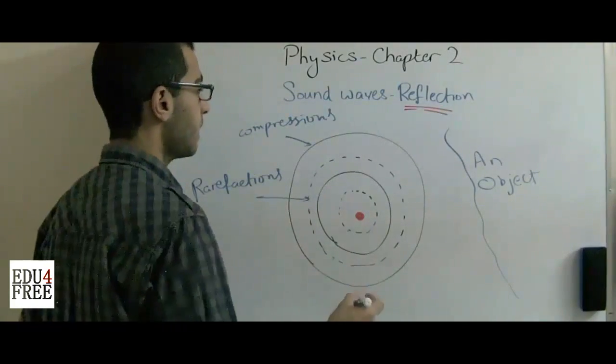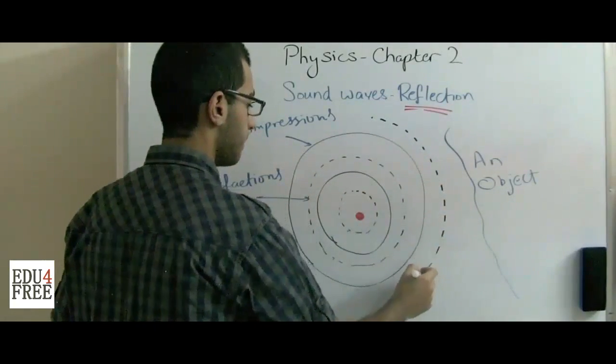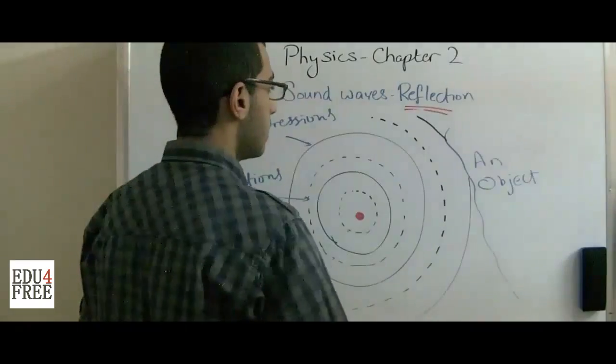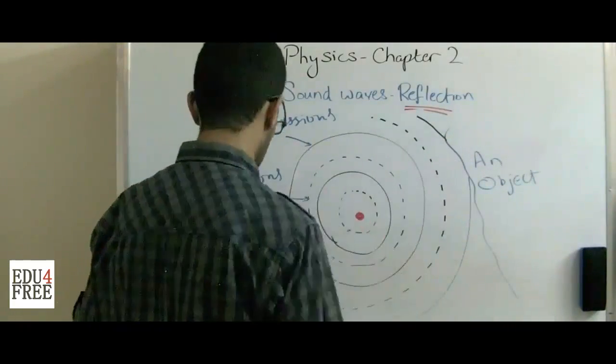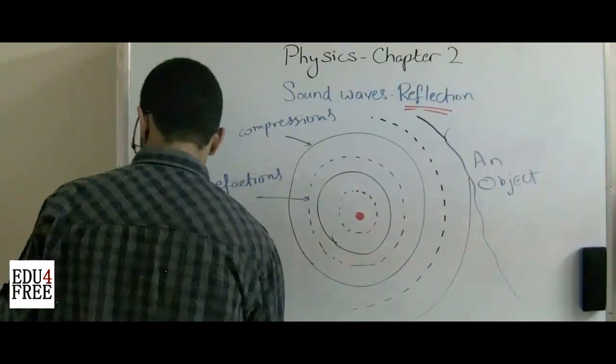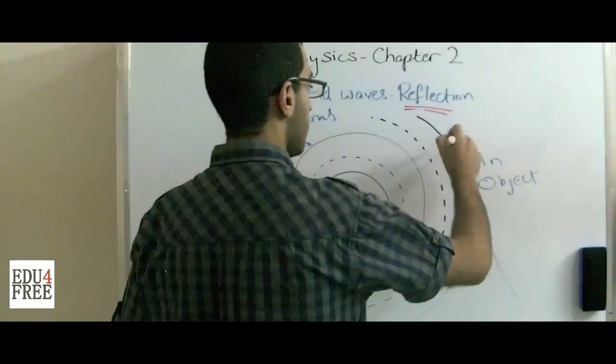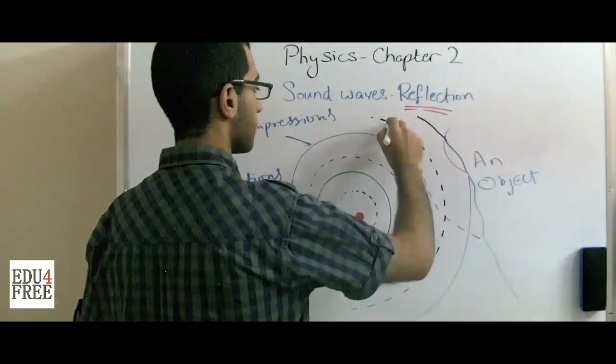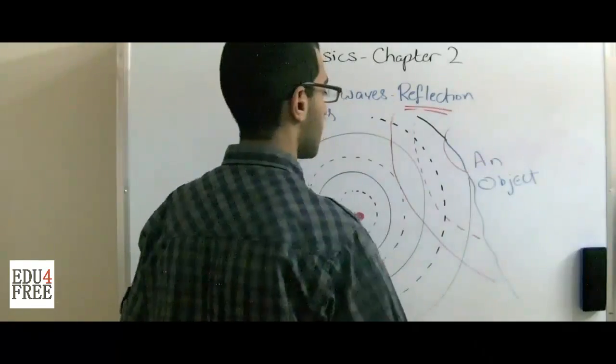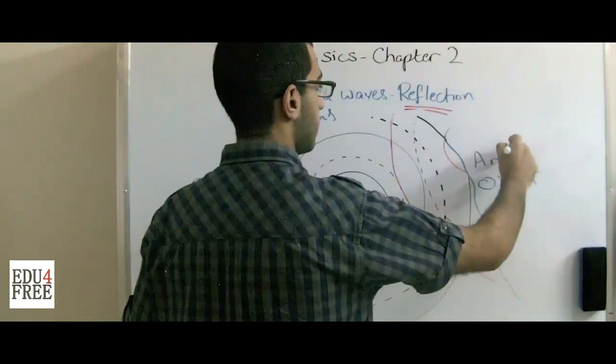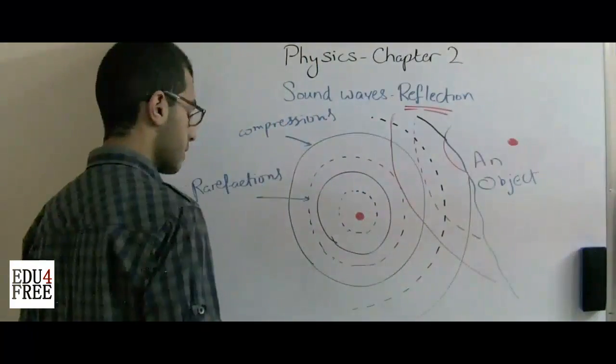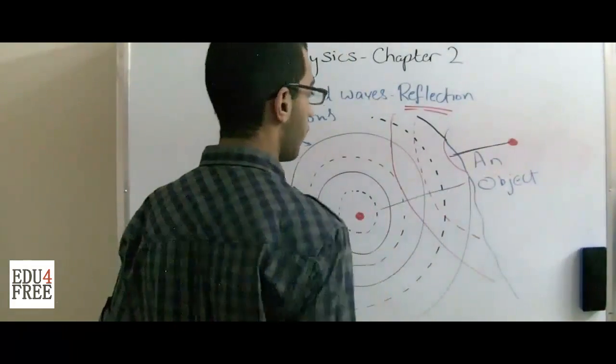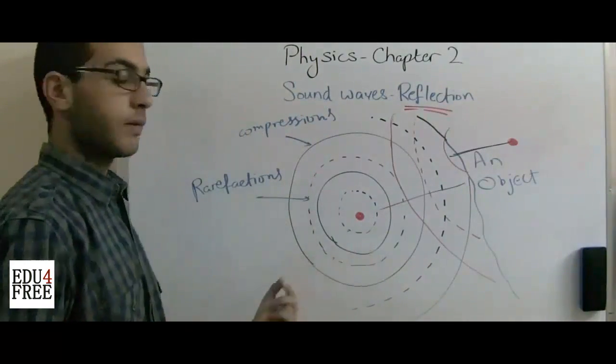What this means is, here, if we complete the part, the wave hits the object at that part. What happens is the waves are reflected back that way, as if there was a vibrating source in here, so that the distance between these two points is equal to the distance between these two points. This is the point of sound reflection.